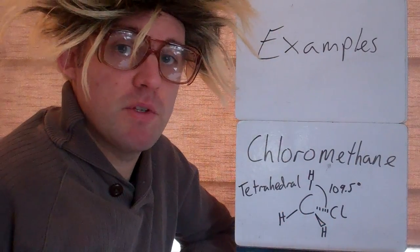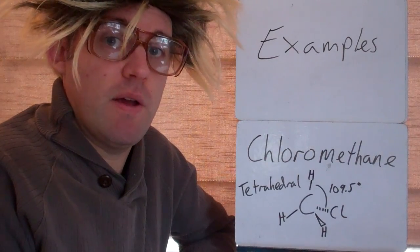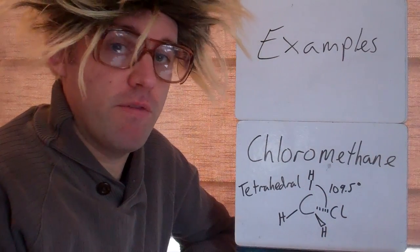This makes a tetrahedral shape. So all the halogenoalkanes will be tetrahedral, just like the alkanes are. So all their bond angles are 109.5 degrees.